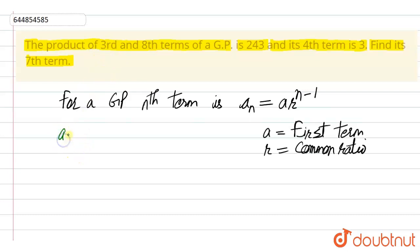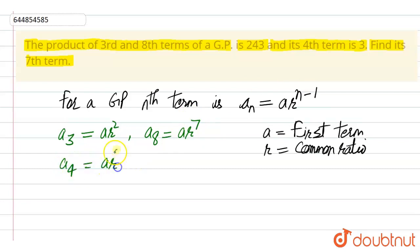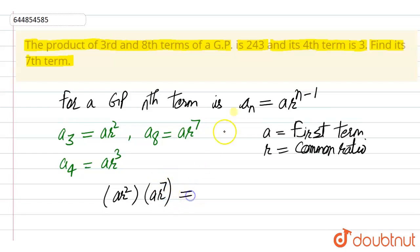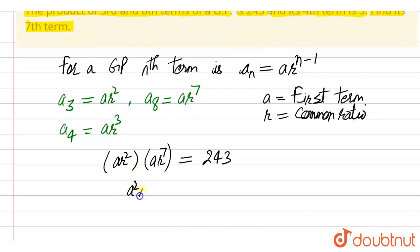The third term is a₃ = ar², the eighth term is a₈ = ar⁷, and the fourth term is a₄ = ar³. The product of the third and eighth terms is ar² × ar⁷ = 243. So we get a²r⁹ = 243. Let this be equation number one.